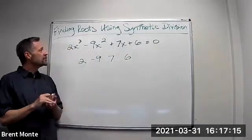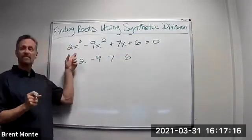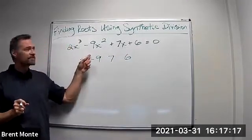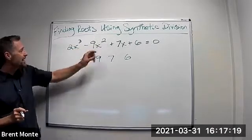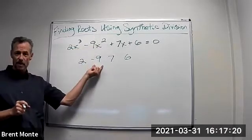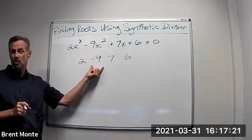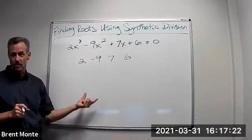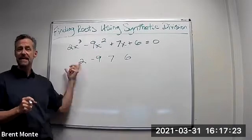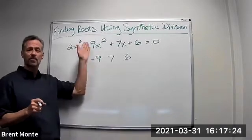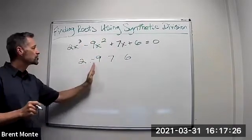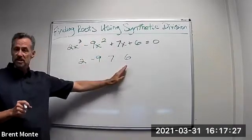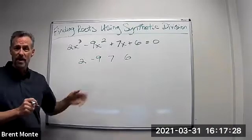Now, if you were missing one of these powers of x — say we didn't have an x squared — I'd have to put a 0 right here in the x squared column. But I'm not missing any powers of x. I go 3, 2, 1, 0. So just list them all the way they are.